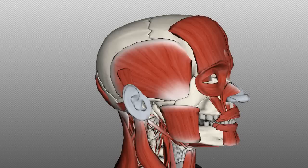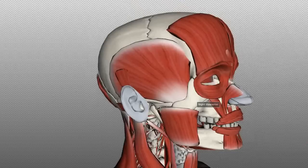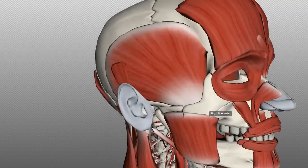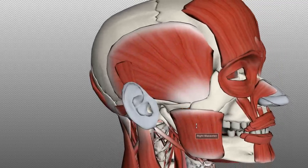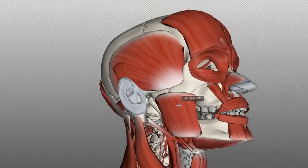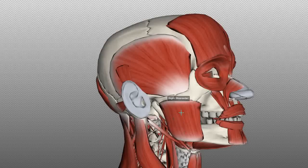This muscle here is the masseter, another muscle involved in mastication. This muscle actually has two parts — a superficial part and a deep part. The deep part inserts a bit more posteriorly on the zygomatic arch and the superficial part inserts more anteriorly on the zygomatic arch. The zygomatic arch is comprised of the zygomatic process of the maxilla and the zygomatic bone. The masseter originates on the zygomatic arch and inserts onto the lateral surface of the ramus of the mandible.